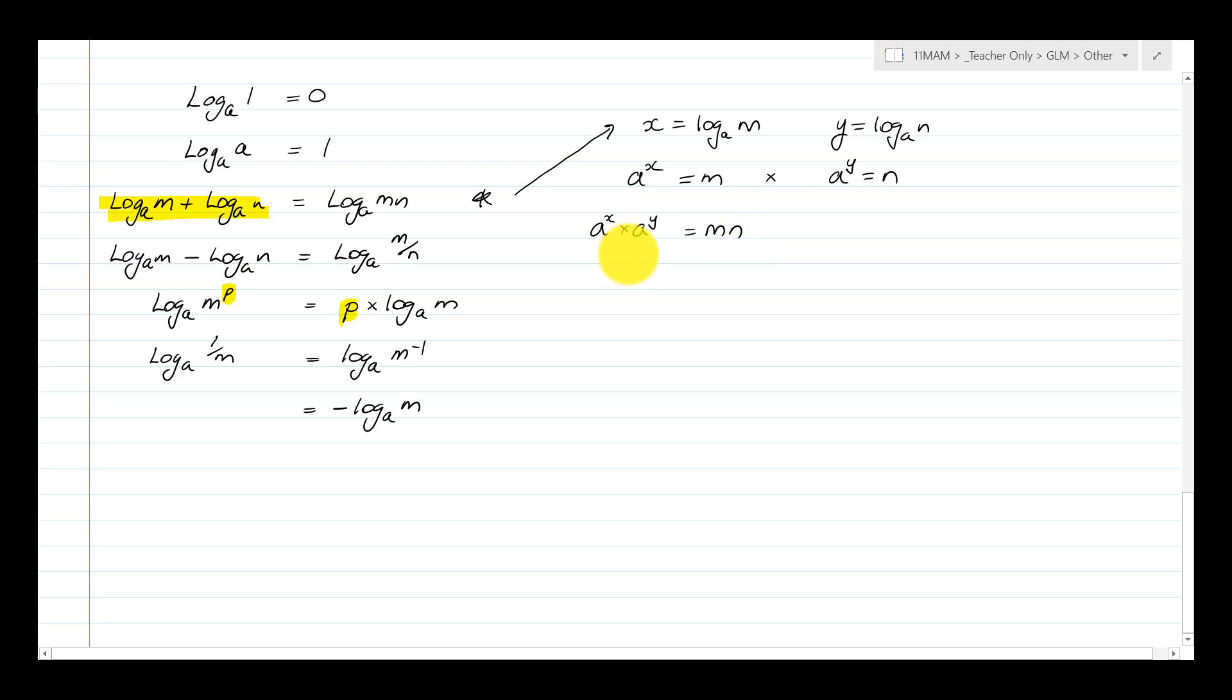And a to the power of x times a to the power of y should be equal to m n. And so therefore, a to the power of x times a to the power of y equals m n, which is a to the power of x plus y, which equals m n.